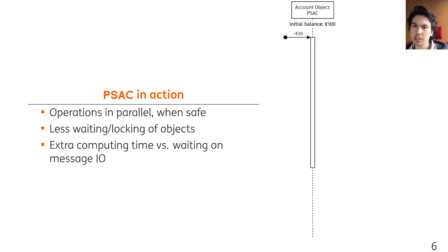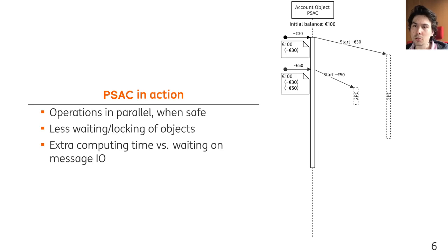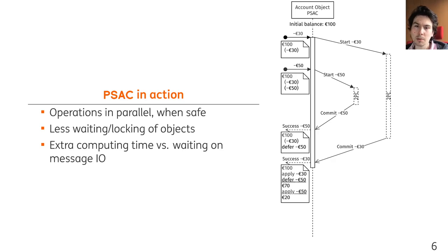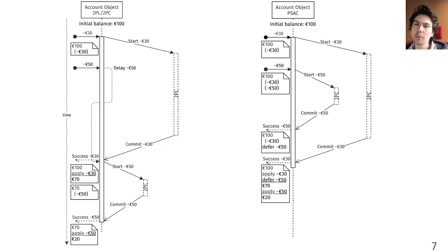This is the same example as before. On the right, we see the same withdrawal of 30 euros coming in, and the two-phase commit transaction starts. But instead of the second operation having to wait, we can already start it, because we can determine that under no circumstances the outcome of the first influences the validity of the second. No matter if the first commits and applies its effects or aborts, we know for sure that enough balance is available for the second withdrawal operation. In this example, the second operation finishes early and its effects are queued. When the first also commits, the effects are applied in order of original arrival. We can see that in this way the object can handle more operations per time unit than with strict two-phase locking two-phase commit. The drawback, however, is that extra computation has to be done in order to determine this independence of operations. But in most cases the CPU is not yet fully utilized anyway and is waiting on I/O with other participants.